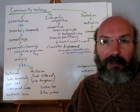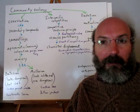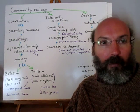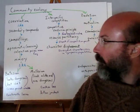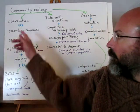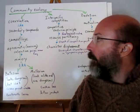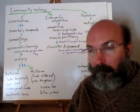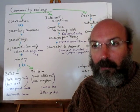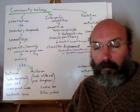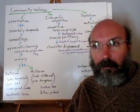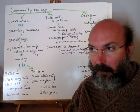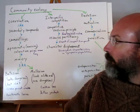Community ecology is the study of the interactions between different organisms. We can look at it in a number of different ways. We can consider co-evolution, in which two organisms or a group of organisms are moving through time together, interacting with each other and changing.